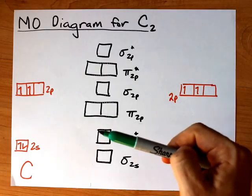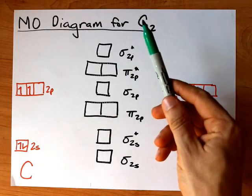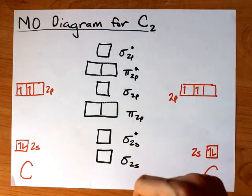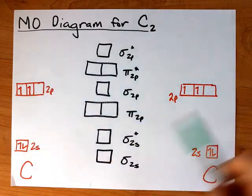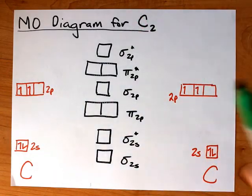But that's not what we're worrying about here. We're assessing whether or not C2 is a stable species and we have eight electrons to deal with to fill this up.